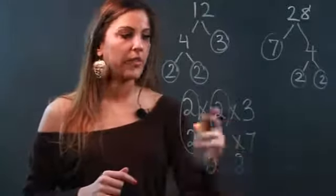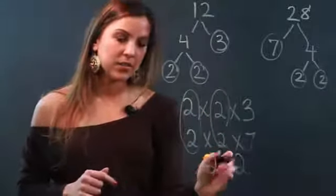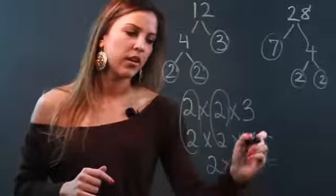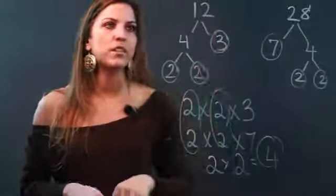And there's nothing else that they have in common. Now since they're factors, that means that we're multiplying. So I have 2 times 2 is 4, and that is the GCF of 12 and 28. So that's how you find the GCF.